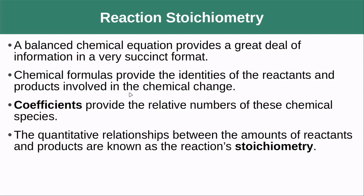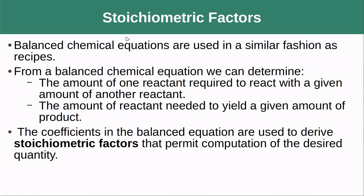So first off, what is reaction stoichiometry? We know that a balanced chemical reaction provides a great deal of information in a very succinct format. The chemical formulas provide the identities of the reactants and the products involved in the chemical change. The coefficients provide the relative numbers of these chemical species, as we saw before with our model reaction. The quantitative relationships between the amounts of reactants and products are what are known as the reaction stoichiometry, and from that stoichiometry we can figure out the stoichiometric factors we need to convert between different chemical species.